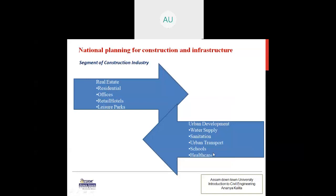First is national planning for construction and infrastructure. Segments of construction industries are: real estate — residential, offices, retail, hotels — leisure parks, and urban development — water supply, sanitation, urban transport, schools, and healthcare.